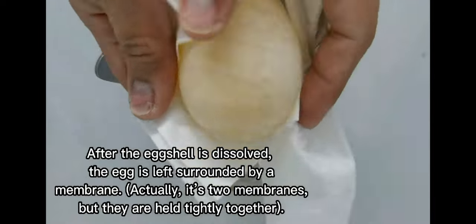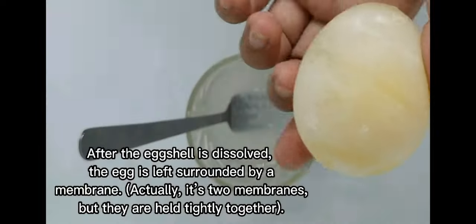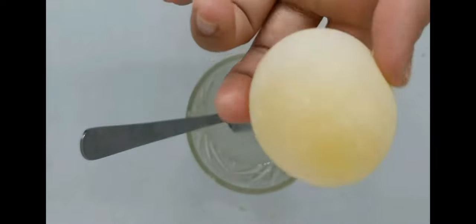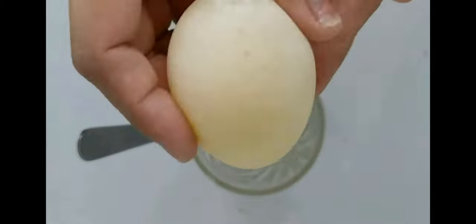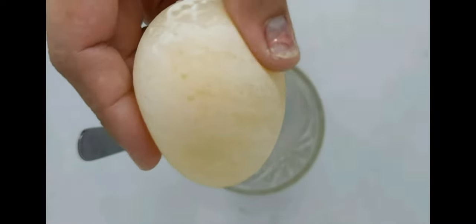Actually, it's two membranes, but they are held tightly together. That is why after 24 hours, our egg appears to be squishy and bouncy.